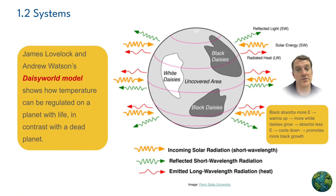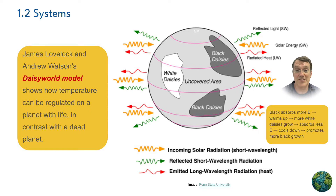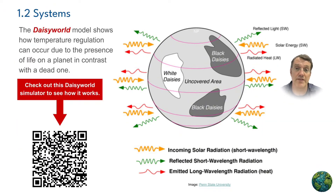The Daisy World model, developed by Lovelock and Watson, illustrates how life itself can help regulate planetary temperatures through negative feedback, contrasting sharply with lifeless planets lacking such mechanisms. I strongly encourage you to scan that QR code on the screen and check out the simulation — you can alter many of the parameters in Daisy World and see how well you're able to manipulate negative feedback mechanisms to create an equilibrium on a planet.